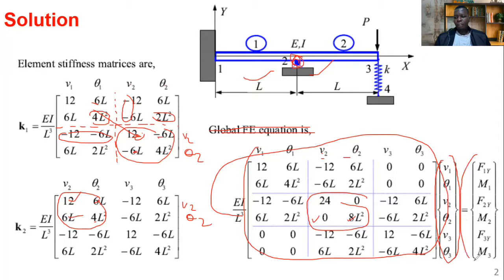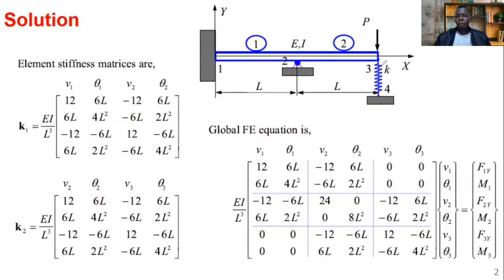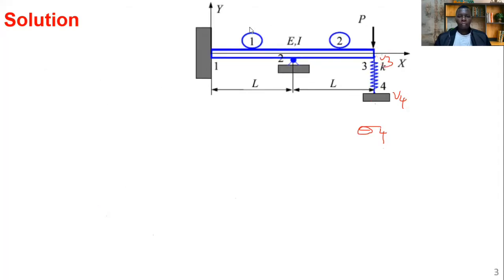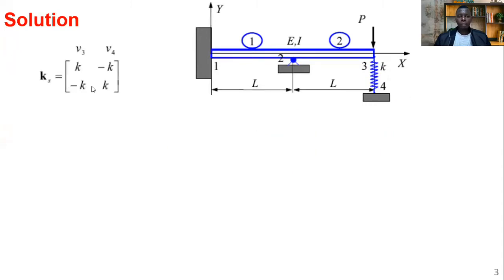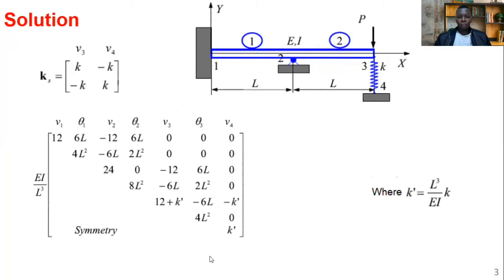This is the stiffness matrix for the combination of the two beam elements. Remember this part should not mislead you — it is not the full global matrix yet. We now need to incorporate the spring. The spring connects nodes three and four, with degrees of freedom v3 and v4 only — there is no theta4 for a spring. The spring stiffness matrix is: k, minus k / minus k, k, corresponding to v3 and v4.